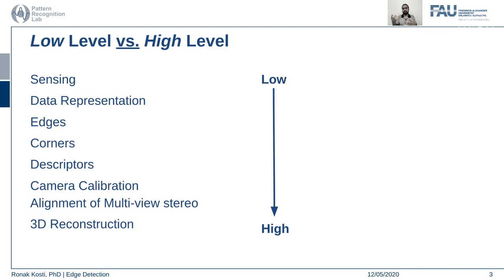As you go from sensing to 3D reconstruction, the definition of computer vision changes from lower level to higher level. Low level tasks require local feature understanding, whereas 3D reconstruction is considered a high level computer vision task because you're constructing a 3D perspective of the real world through different images. There are multitudes of steps involved in between.